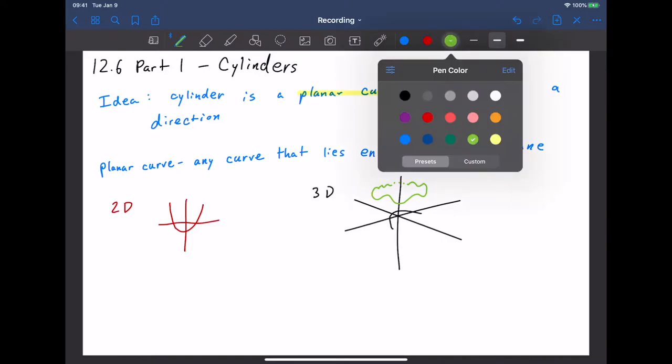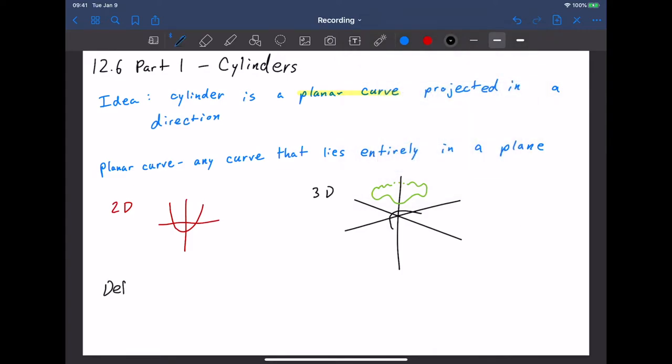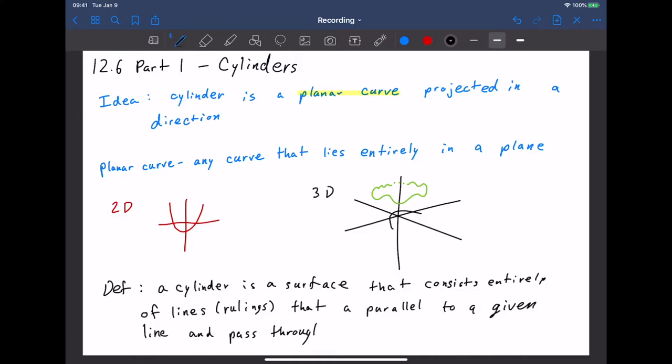Okay so the book's definition. A cylinder is a surface that consists entirely of lines which we'll call rulings sometimes that are parallel to a given line and pass through a planar curve.